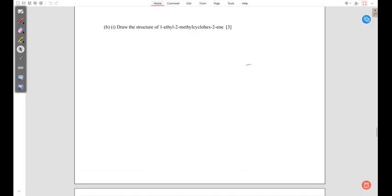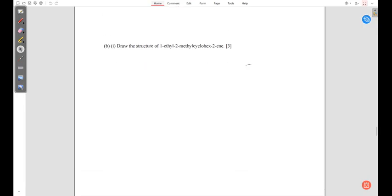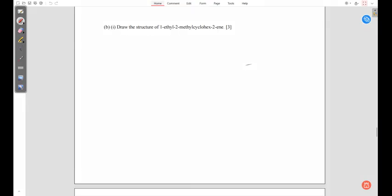B1 says draw the structure of 1-ethyl-2-methyl cyclohexene. Hexene represents six carbons, and cyclo means it's a cyclic compound. So let's draw: one, two, three, four, five, six.